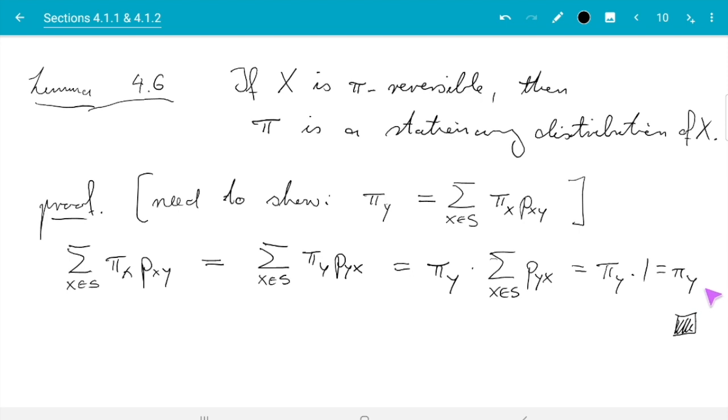So don't worry if you don't have any intuition about this. That proof is easy enough. I would say that even without intuition, you can probably reconstruct that from memory even after a long time. If only you remember what is pi reversible and what does it mean for pi to be a stationary distribution.